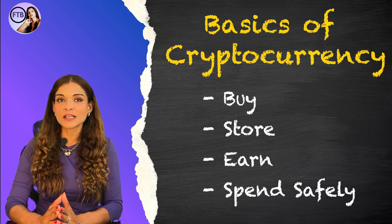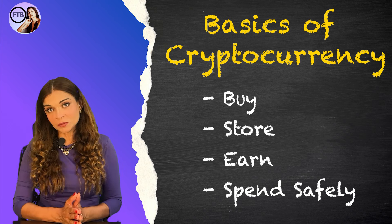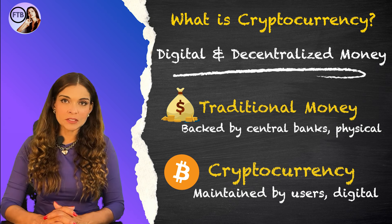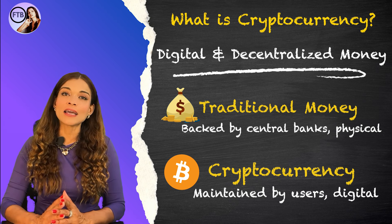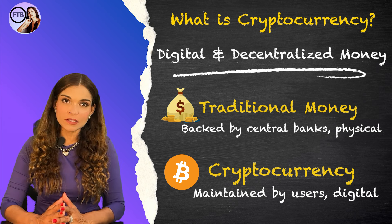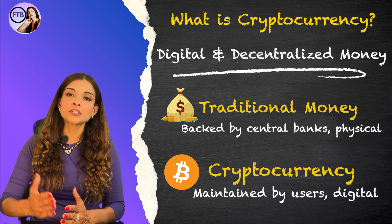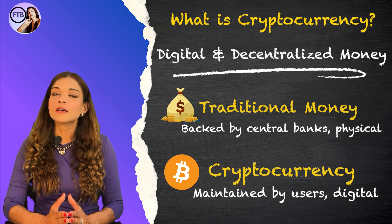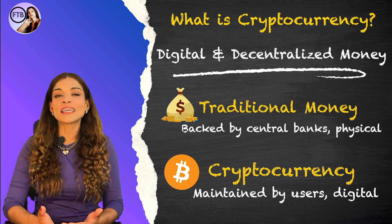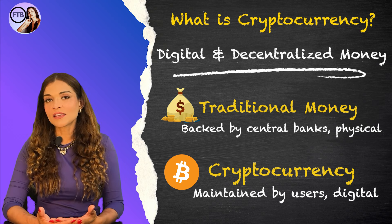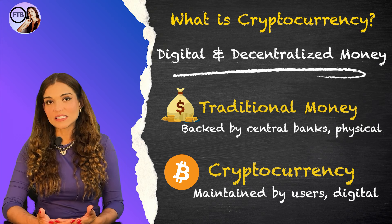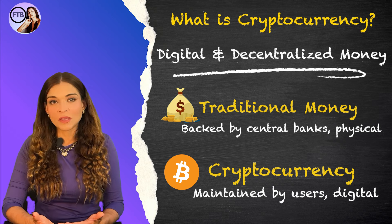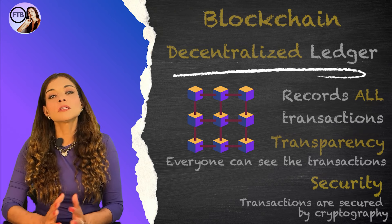First of all, what is cryptocurrency? Simply put, it's a digital and decentralized type of currency. Unlike traditional money, which is backed by central banks, cryptocurrencies are maintained by their users. Think of cryptocurrency as digital money, with Bitcoin of course being the most famous one.